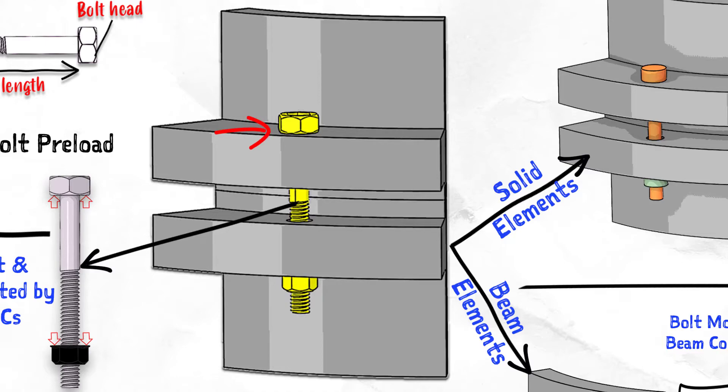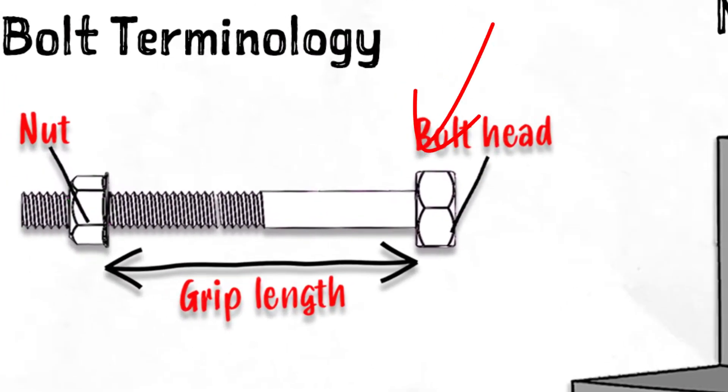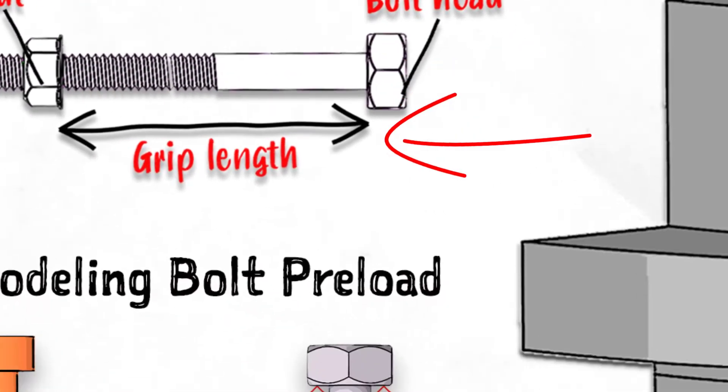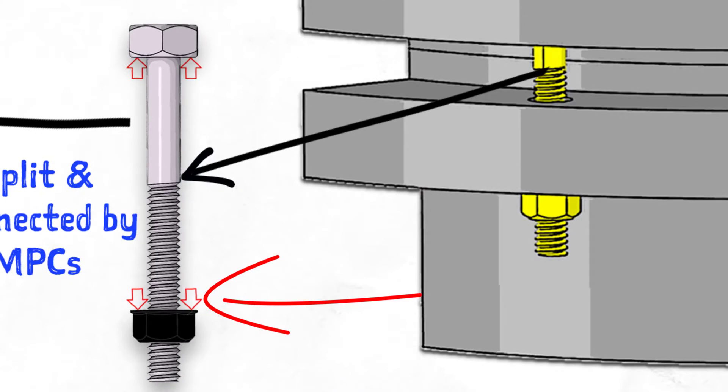We started with a typical bolted joint and the role of a bolt in this assembly. We have learned the taxonomy of the bolt and nut assembly followed by its mechanics. When a bolt is tightened, the mating parts apply forces on the bolt head and the nut, and this creates a state of pre-tension in the bolt shank.